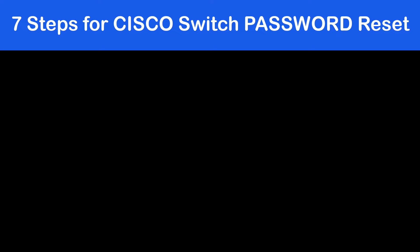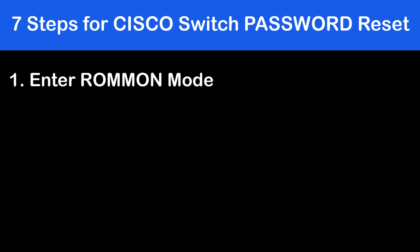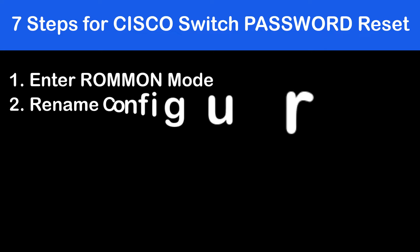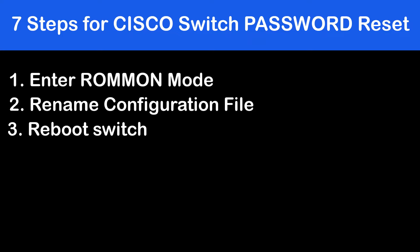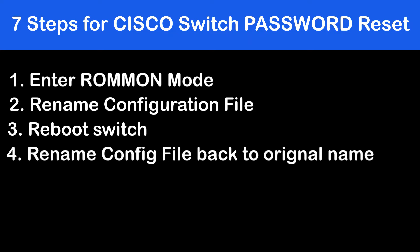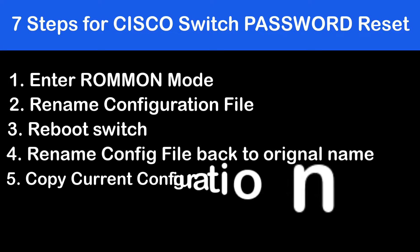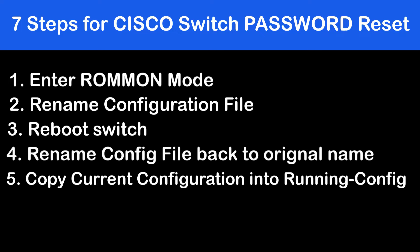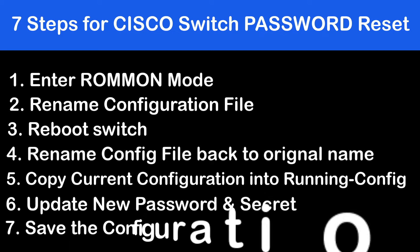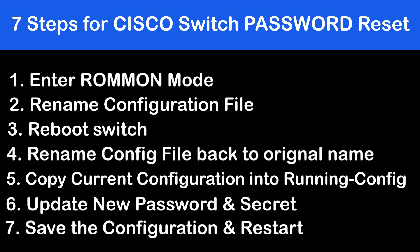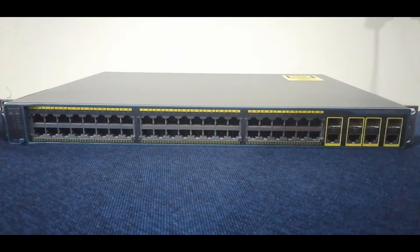My name is Abdir Basad and I'm going to use a real Cisco 2960 switch in this video. We will do this with very easy and simple seven steps. First, we will enter ROMMON mode of the switch. Number two, we will rename the configuration file. Number three, we will restart the switch. Number four, we will rename the configuration file with the original name. Number five, we will copy it to running config. Number six, we will update the new password and secret.